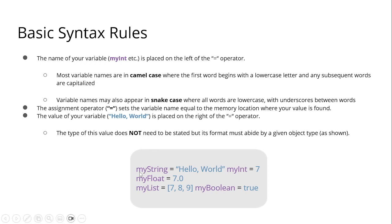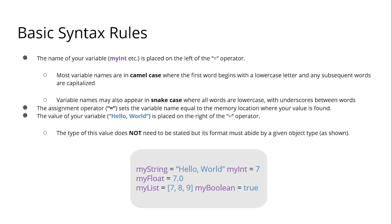In camelCase the first word begins with lowercase — for example 'my' — and any subsequent words are capitalized. So for 'myString', the S is capitalized. Variable names may also appear in snake_case, where all words are lowercase with underscores between words.